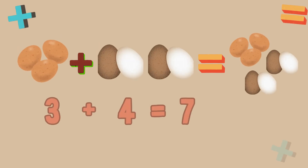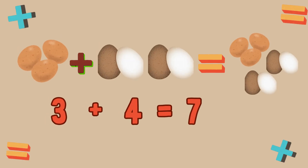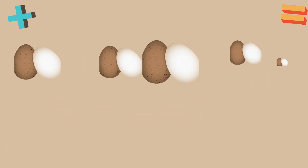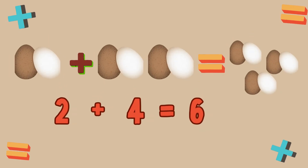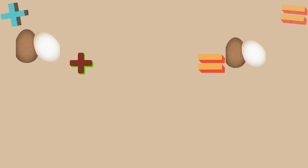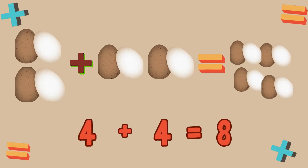How many eggs are here in total? 3 eggs plus 4 eggs — there are 7 eggs altogether. 3 plus 4 is equal to 7. How many eggs are here in total? 2 eggs plus 4 eggs — there are 6 eggs altogether. 2 plus 4 is equal to 6. How many eggs are here in total? 4 eggs plus 4 eggs — there are 8 eggs altogether. 4 plus 4 is equal to 8.